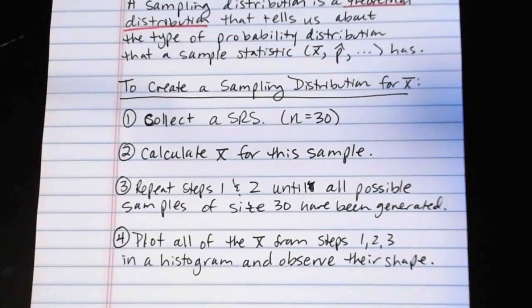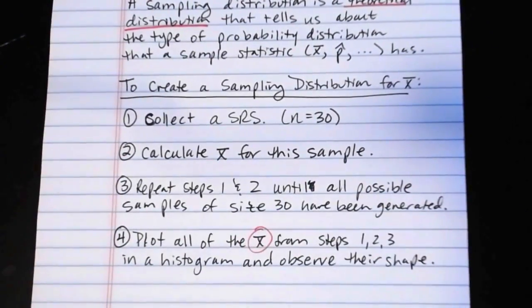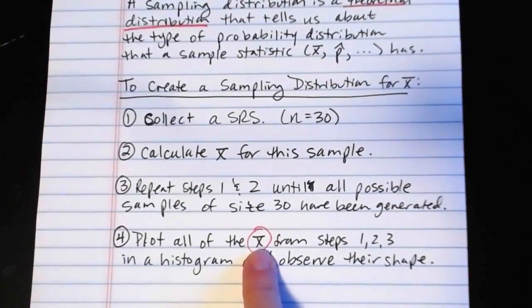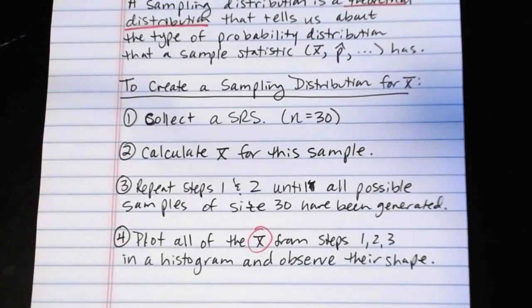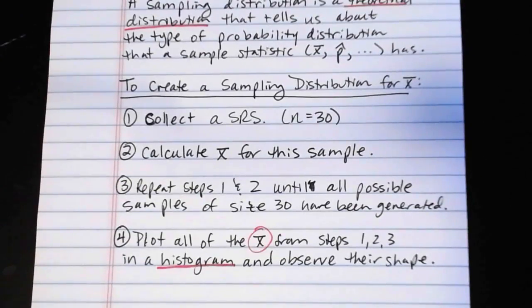Okay, but the key difference, the key thing to know about a sampling distribution, is it tells us how a sample statistic is distributed, how in this case an x bar is distributed, rather than the raw data values, the raw x's, and it will include x bars from many samples, all taken together on one histogram, rather than x values from just a single sample. So that's the key with the sampling distribution.